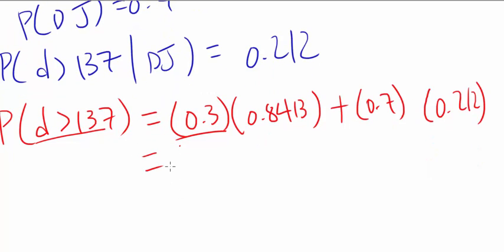So that's gonna be the answer. And what is that? 0.3 times 0.8413 plus 0.7 times 0.212 gets you about 0.401. So that's the answer.